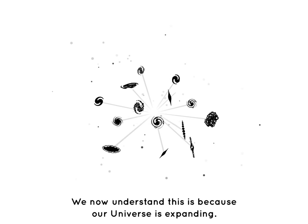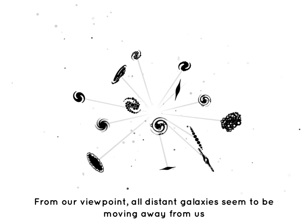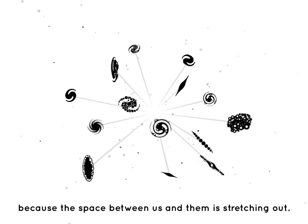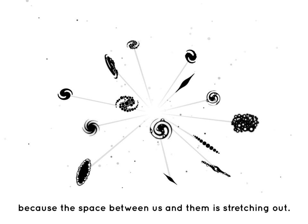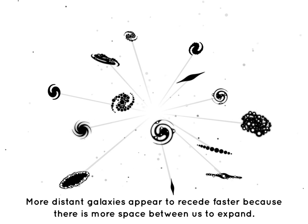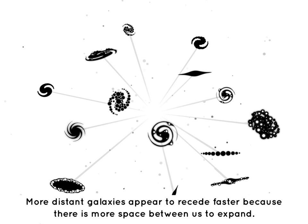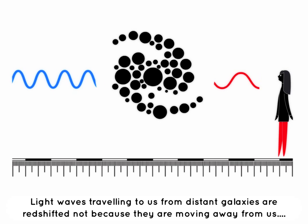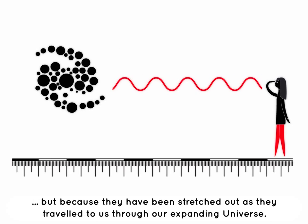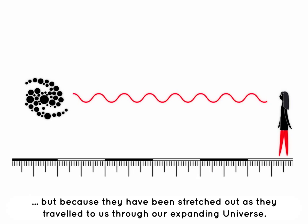We now understand this is because our universe is expanding. From our viewpoint, all distant galaxies seem to be moving away from us because the space between us and them is stretching out. More distant galaxies appear to recede faster because there is more space between us to expand. Light waves travelling to us from distant galaxies are redshifted not because they are moving away from us, but because they have been stretched out as they travelled through our expanding universe.